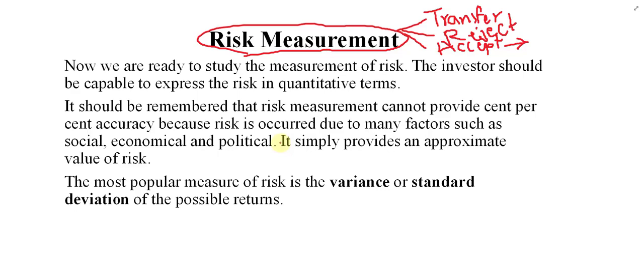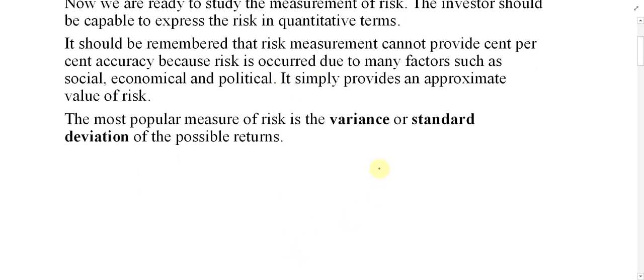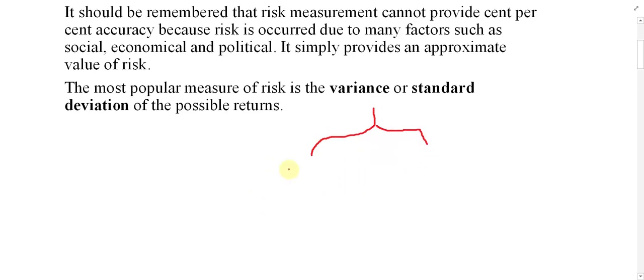A risk of 10% might be more for Ahmad but less for Mahmoud. It depends on the level of risk acceptance of each person. Some people are risk averse; some people accept the risk. So you have to measure the risk — unless you measure it, you cannot control it. In order to measure risk, we have several tools and techniques.